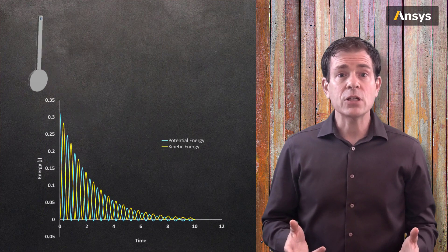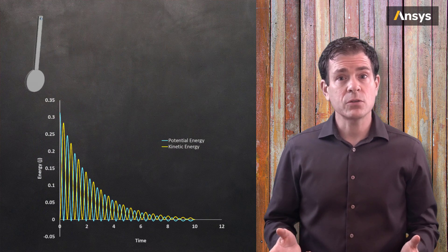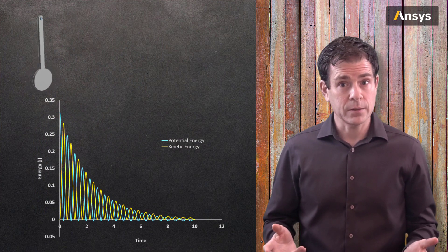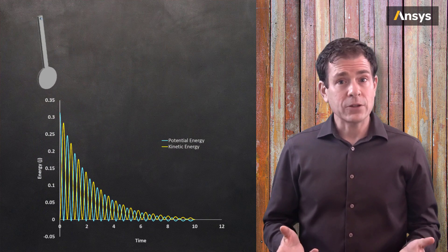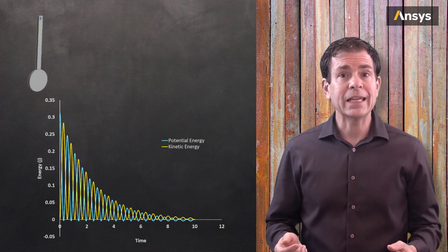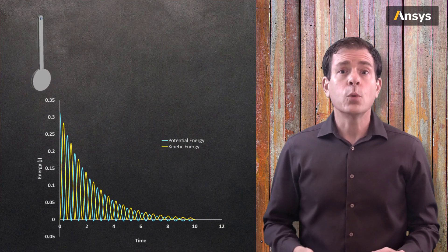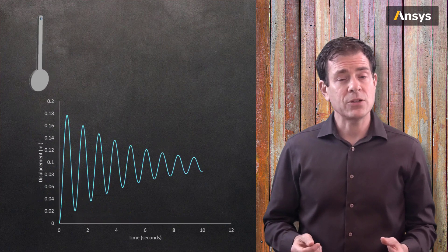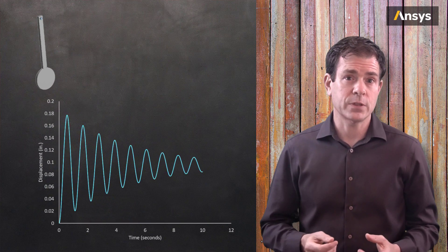We see the energy alternates between potential and kinetic energy as expected, and that the total energy, sum of the potential and kinetic energy decreases over time. We also see how the amplitude of the pendulum displacement decreases over time.